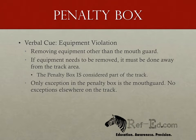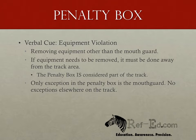If a player in the penalty box removes safety equipment other than the mouth guard, that penalty gets the verbal cue of 'equipment violation.' Adjusting equipment isn't to be penalized, but equipment cannot be taken off to be adjusted. If equipment needs to be removed, the skater can go to her bench after serving her penalty, or remove herself from play completely after penalty time has expired. The penalty box is considered part of the track, so safety equipment must stay in place. Removing safety equipment anywhere on the track is an equipment violation penalty. The mouth guard is an exception in the penalty box only.